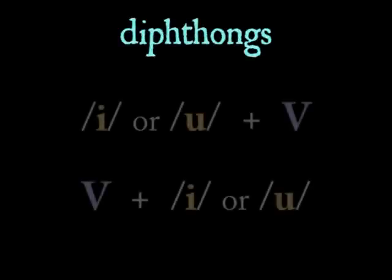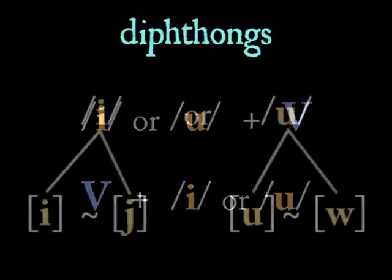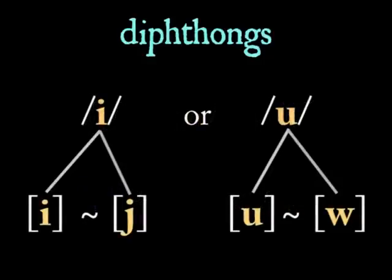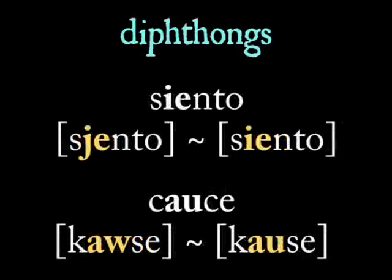Next, we'll move on to diphthongs. Spanish diphthongs start or end with the high vowel, I or U. Here we'll find examples of free variation, since the diphthongs sometimes have a short vowel, I or U, but other times have a more restricted glide, I or U. Cuenta or Cuenta. Cuál or Cuál. Ciento or Ciento. Cauce or Cauce.